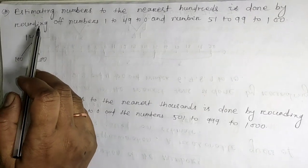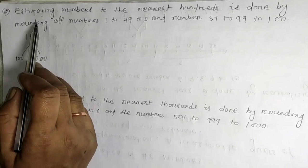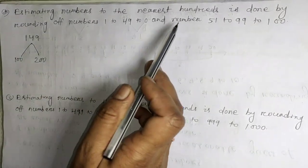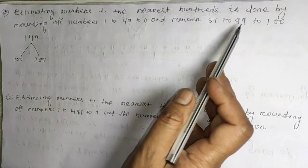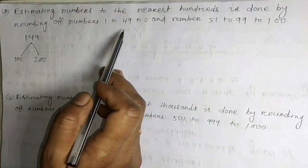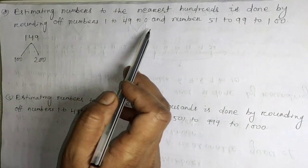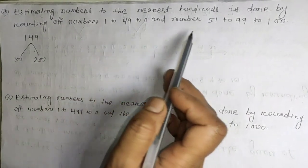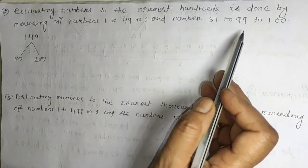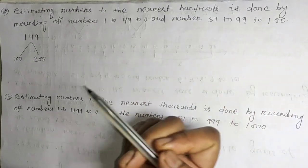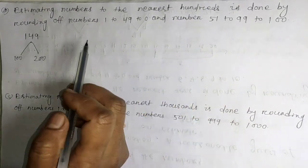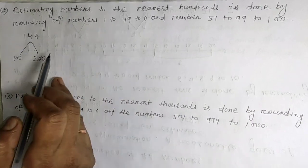In the next part, estimating numbers to the nearest hundreds is done by rounding up numbers 1 to 49 to 0, and numbers 51 to 99 to 100. So we round off in hundreds.